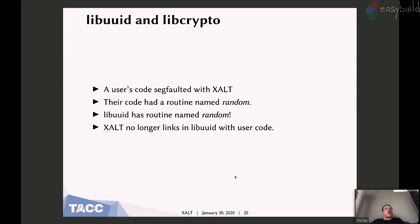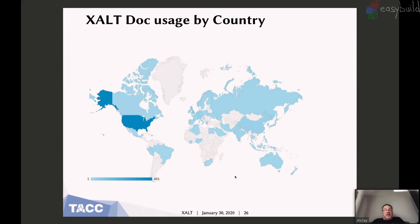I've discovered that Exalt makes me a developer on every program that's ever been built, in the sense that my code gets added to their code, so I have to be careful. A user code seg-faulted with Exalt: their code had a routine named 'random', and libUUID also has a routine called 'random'. Instead of calling the system random, it called the user's random, which had a different syntax and number of arguments and caused the code to abort immediately. So I've modified Exalt to no longer link user code with libUUID.